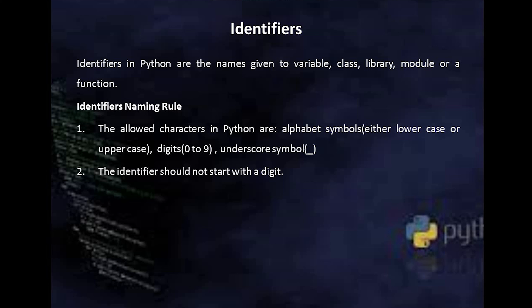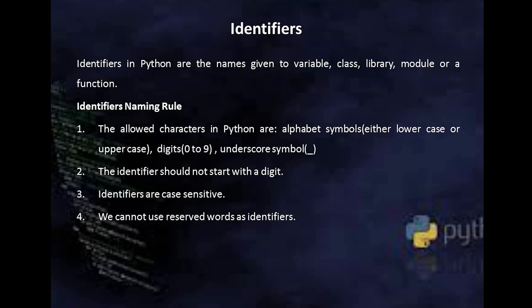The second important rule is that identifiers cannot start with a digit. Next, all identifiers are case sensitive — as in C, C++, and Java. However, in some languages like HTML or SQL, they don't follow case sensitivity rules. We also cannot use reserved words as identifiers, as every language provides some reserved words to be used for their specific purpose only. There is no length limit for identifiers — in Python, unlike early C, there is no length limitation for identifiers.